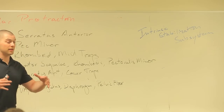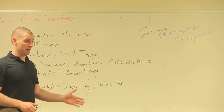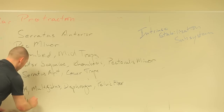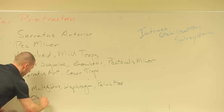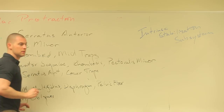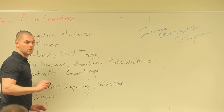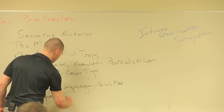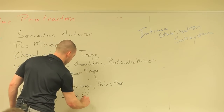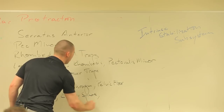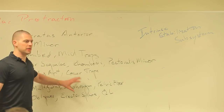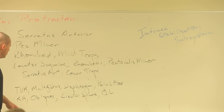We then can add the more superficial movers on top of that, which are going to be rectus abdominis, obliques — since we know both are included — erector spinae, and quadratus lumborum. It is deep, but it's still part of our core, so it's one of the bigger movers.